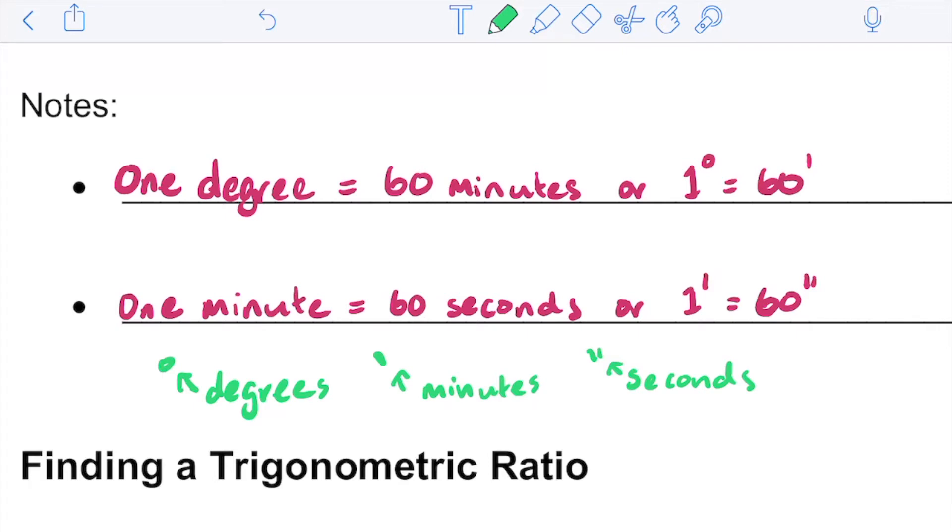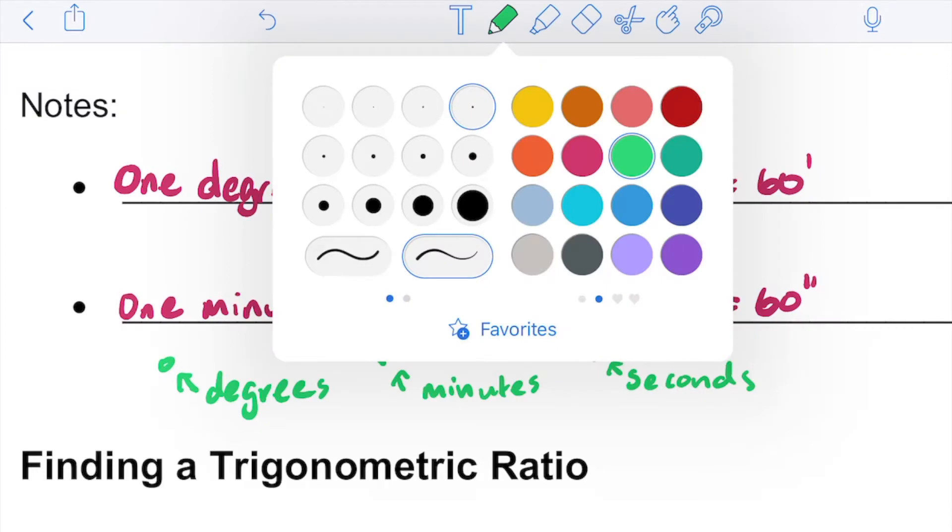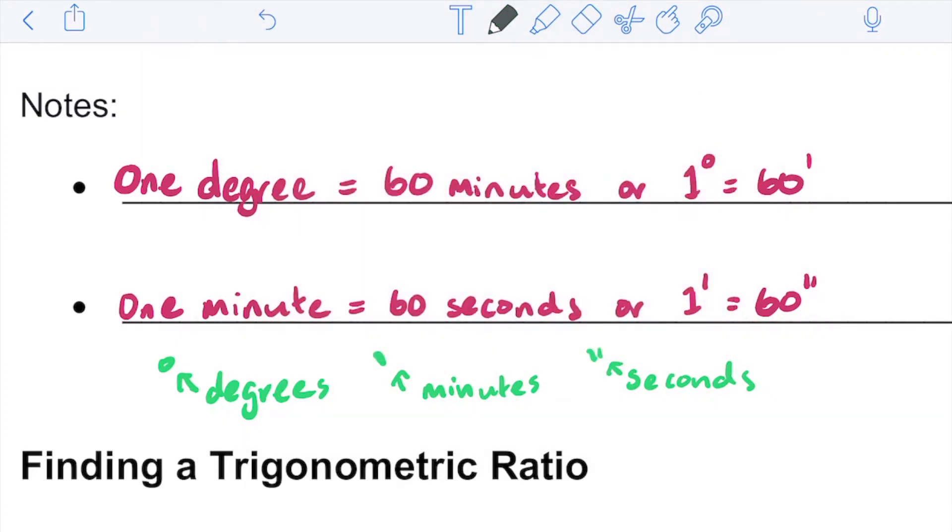Now the key that we are going to use on the calculator is the degrees minutes seconds button. This button will either look like DMS for degrees minutes seconds or it'll have the actual symbols themselves. These are the two buttons that you need to look for on your calculator.